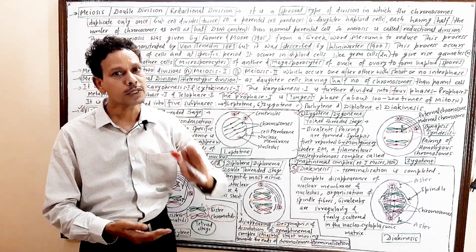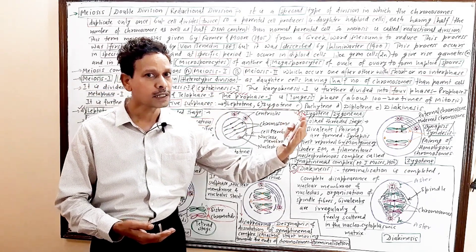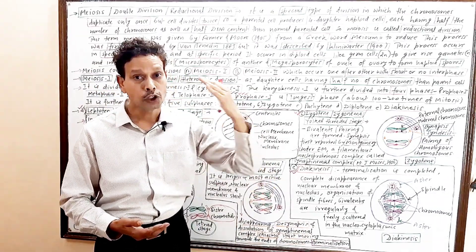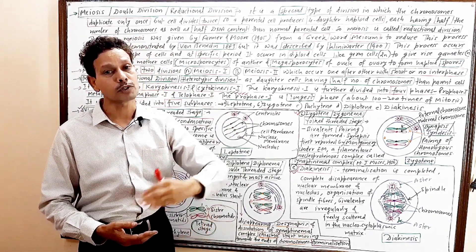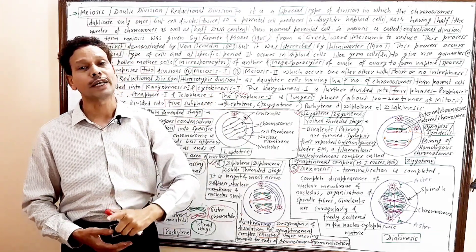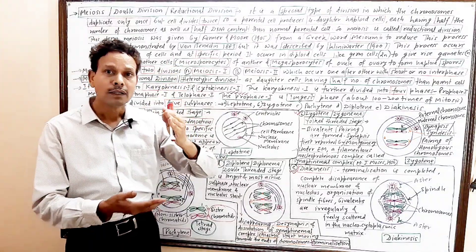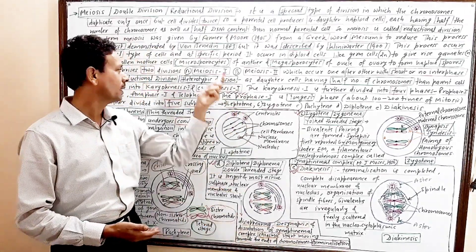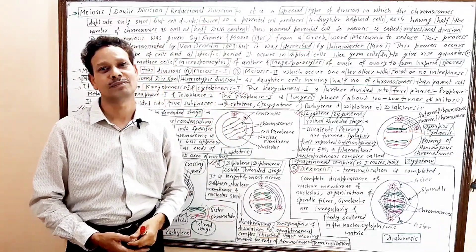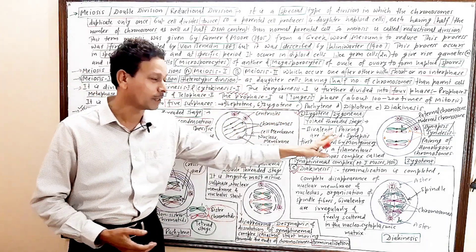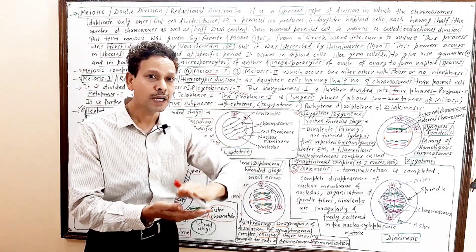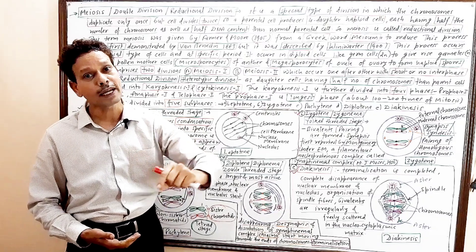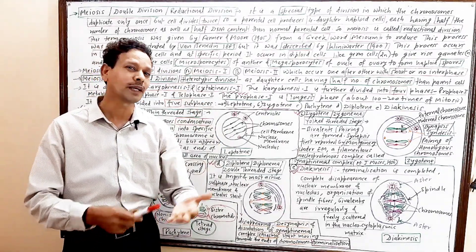Meiosis first is further divided into two phases: karyokinesis (nuclear division) and cytokinesis (cytoplasmic division). Meiosis first is a reductional division — chromosomes are reduced to half. It is heterotypic because the daughter cells have different sets of genes. Karyokinesis is further divided into four stages.